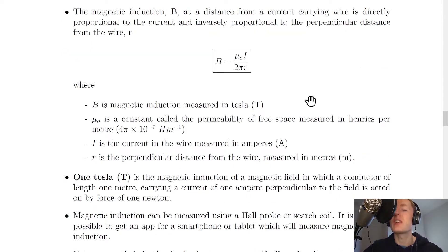The relationship you get given for magnetic induction on the relationship sheet in the exam says that B equals μ₀I over 2πR, where B is magnetic induction measured in Tesla. μ₀ is a constant called the permeability of free space measured in henries per meter which has a value of 4π times 10 to the minus 7 henries per meter.